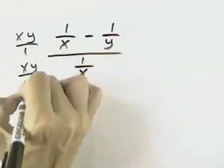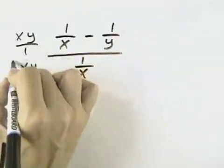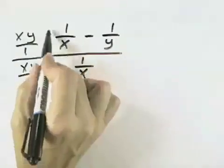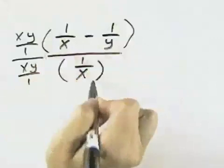But because I'm working with fractions, I'll write it as xy over 1 over xy over 1, multiplying through in the numerator and the denominator.